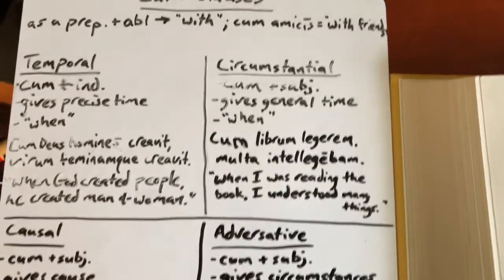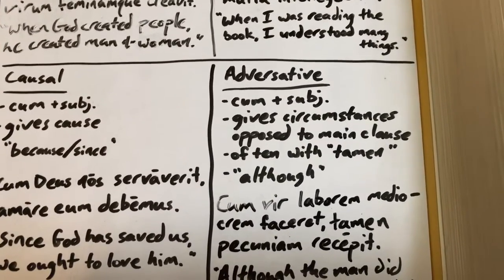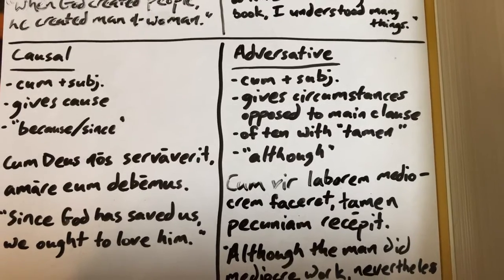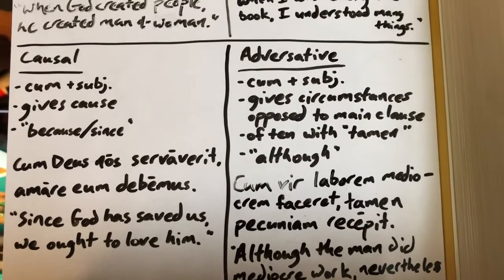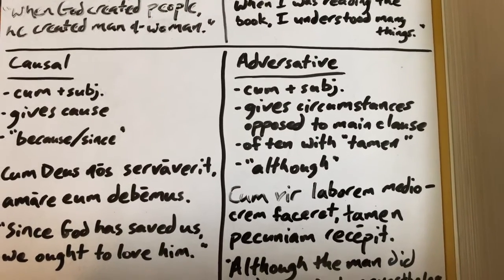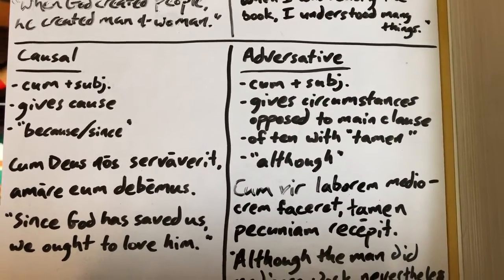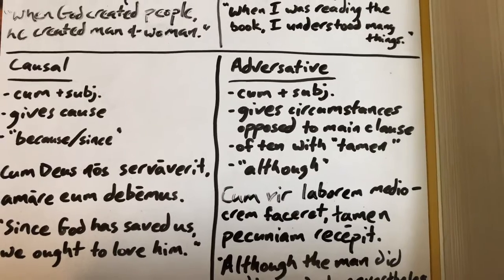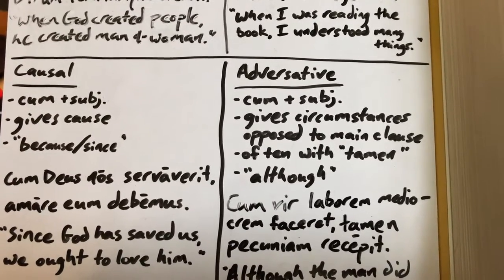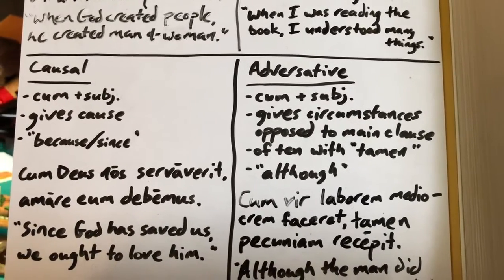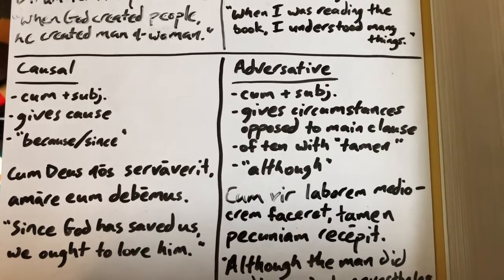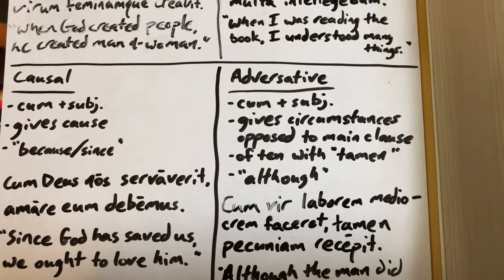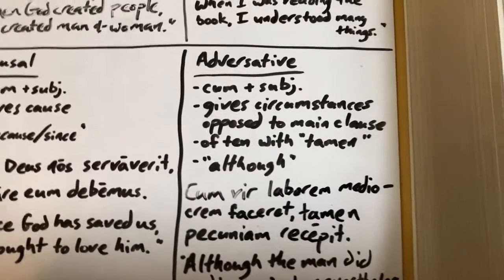The third type is the cum causal clause. This one also takes a subjunctive verb and gives the cause. It is translated with 'since' or 'because.' For example: 'Since God has saved us, we ought to love him' — or 'Because God has saved us, we ought to love him.' It gives us the cause, explaining why we ought to do something.